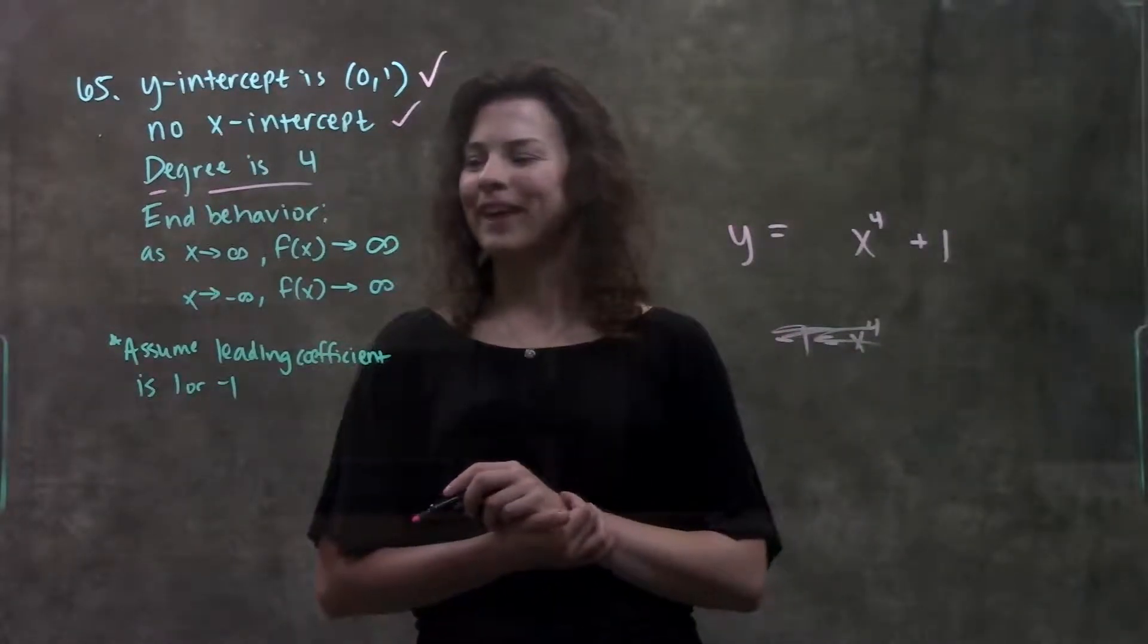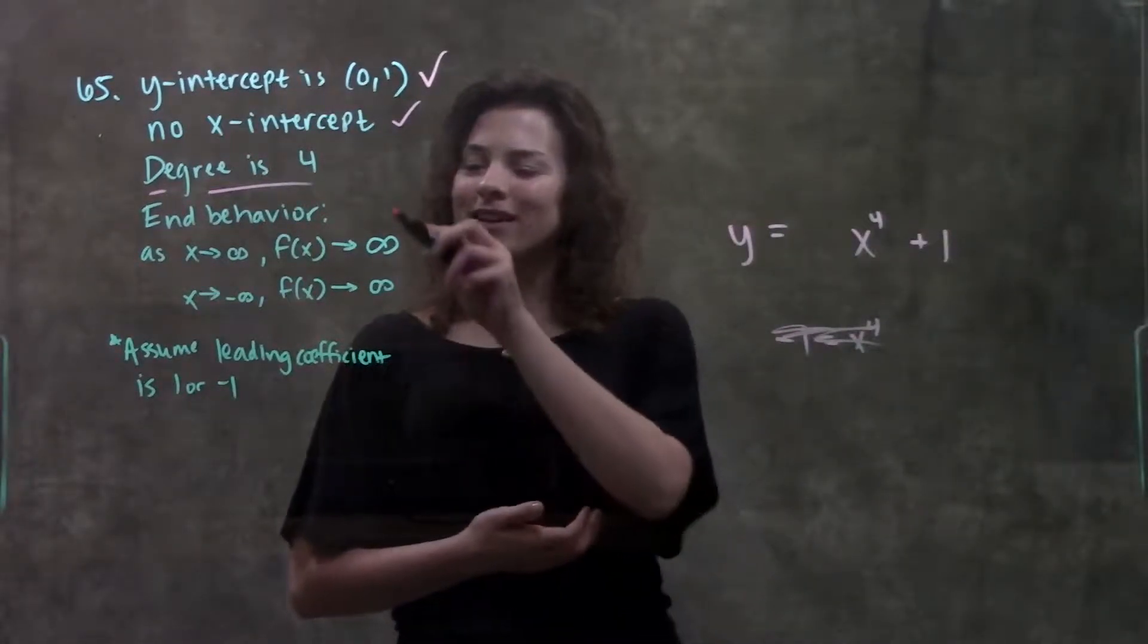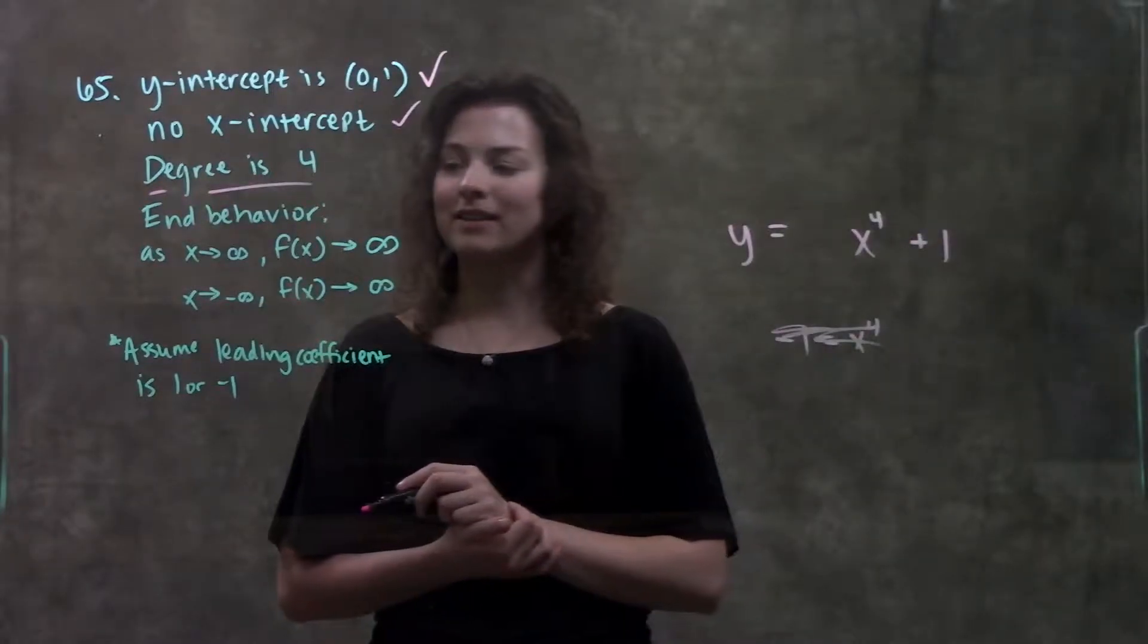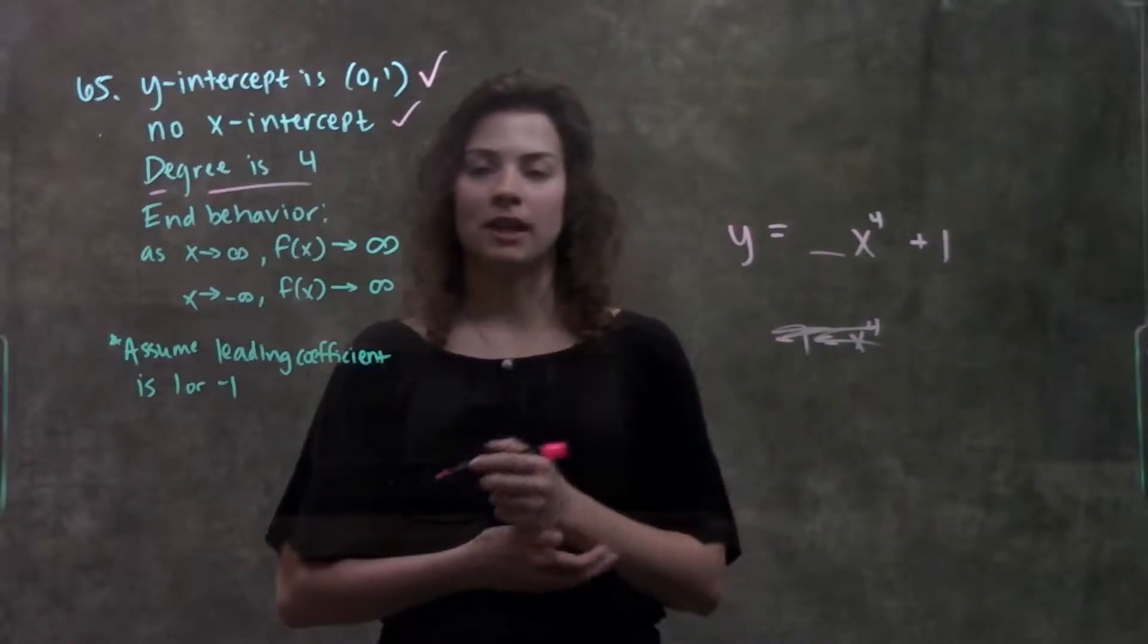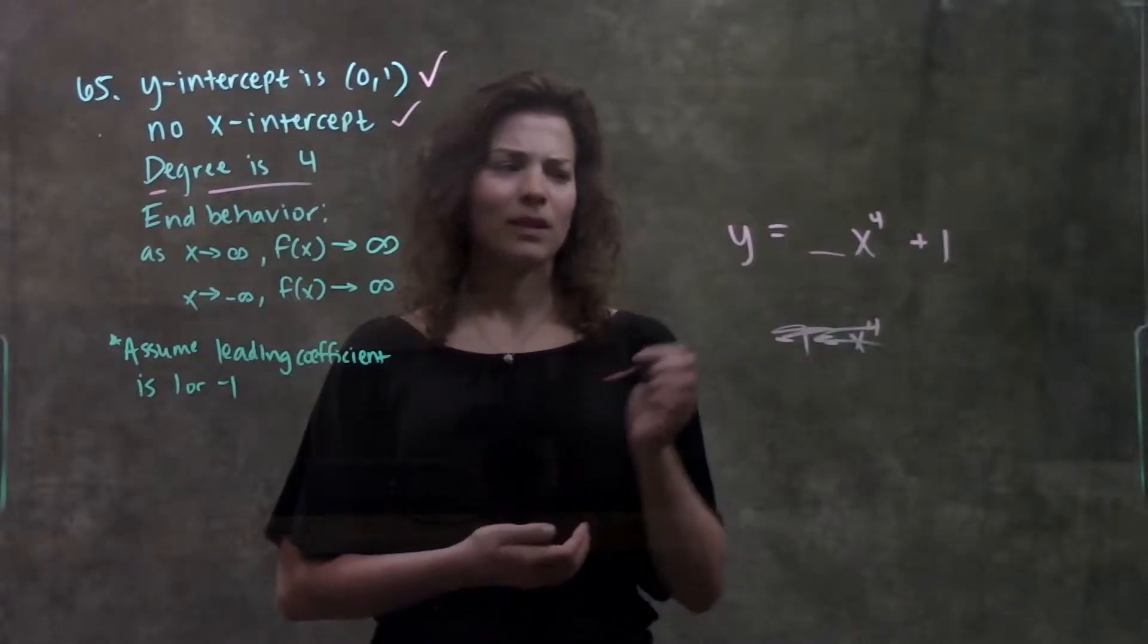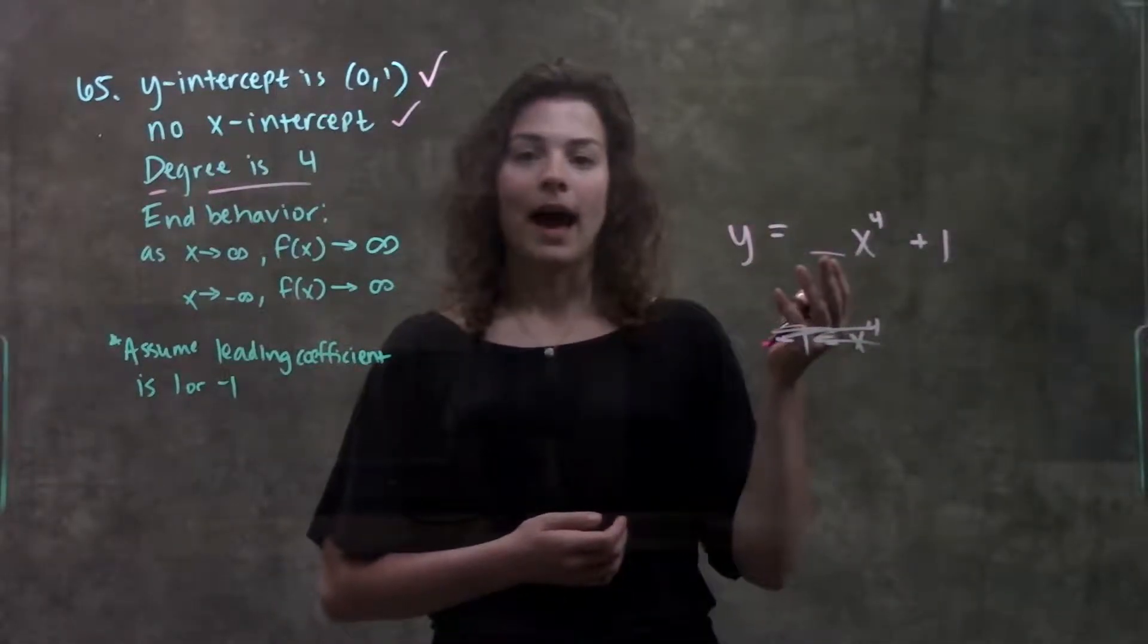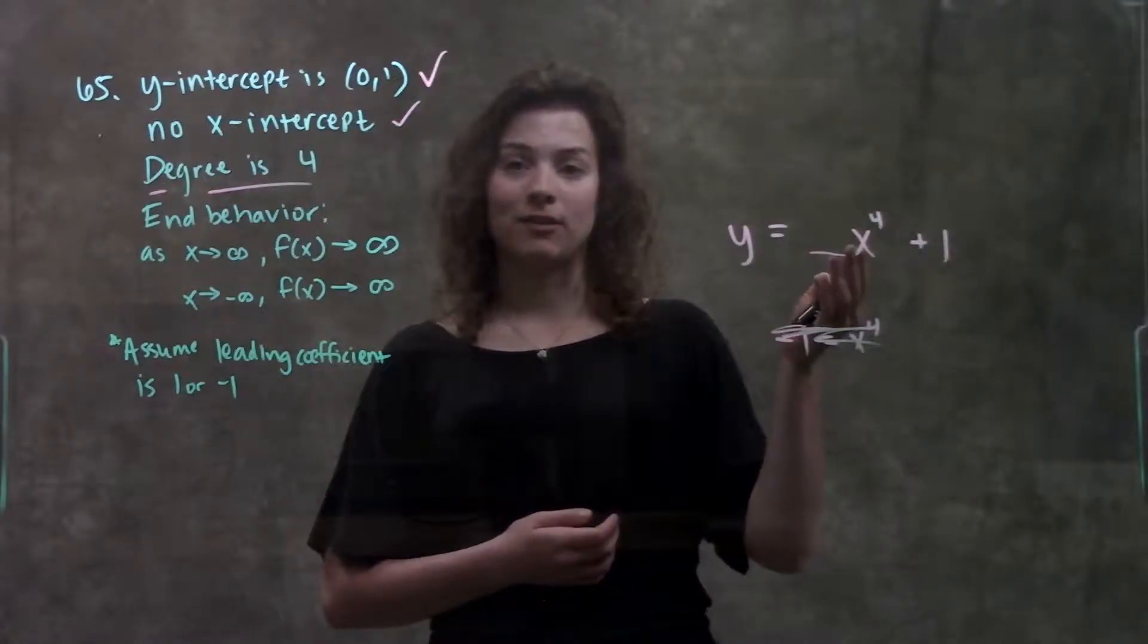Alright, cross that part out. Okay, now moving on to the last part they tell us. They tell us the end behavior of the function. The end behavior will tell us about this coefficient in front of my leading term. So, first, just looking at my leading term, I have x raised to an even power.